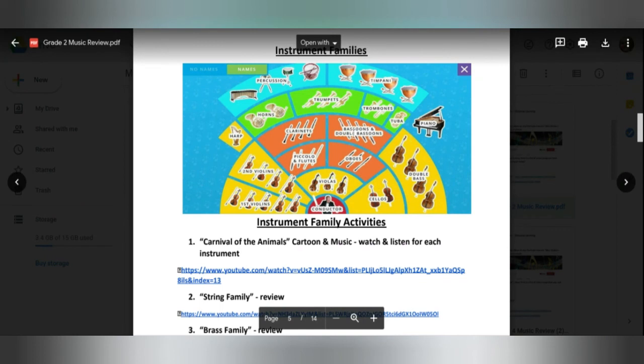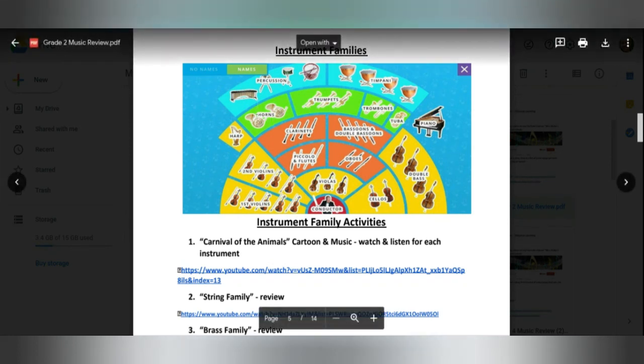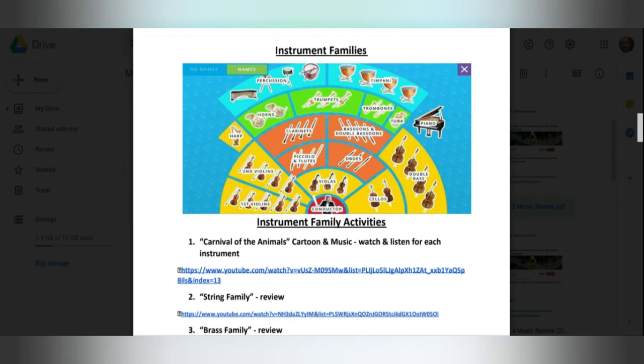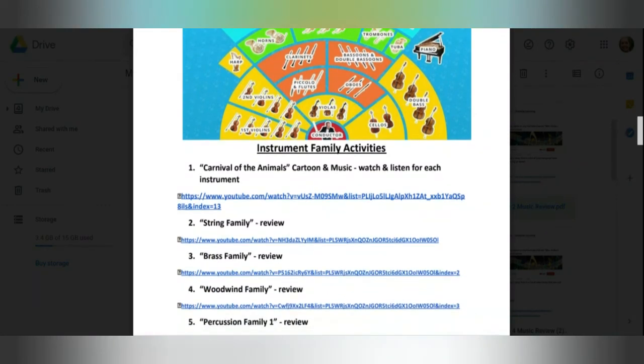We learned all about the brass family and how they have kind of that golden color and you blow into the mouthpiece and press the valves. And those are French horns, trumpets, trombones, and tubas. The trombone, remember, has that really long slide that you push in and out. And our percussion family has a bunch of different instruments. We played a lot of those this year. We played shakers or maracas, we played cymbals, we played drums. We did a lot. We played xylophones, which are a part of percussion as well. So we're going to do a lot more of that next year too.